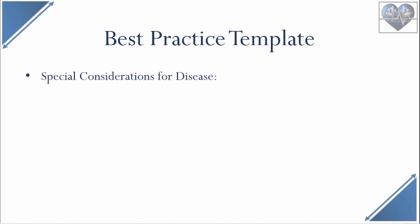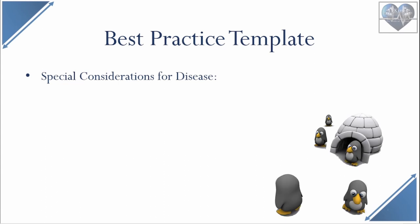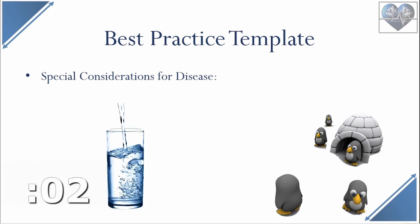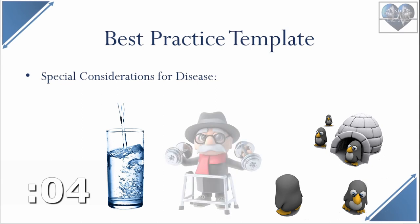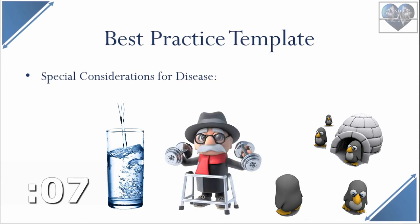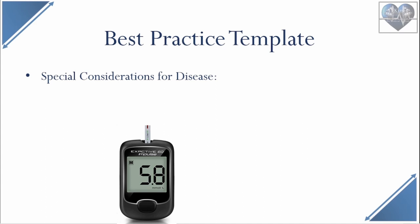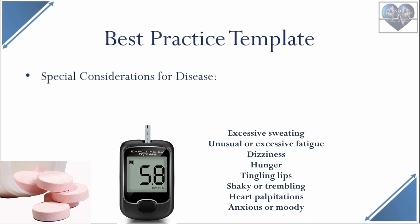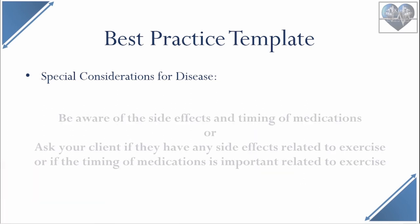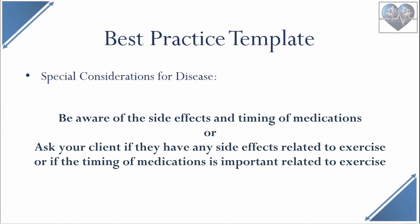Two quick examples of how to insert special considerations for disease: for individuals diagnosed with multiple sclerosis, make sure the training environment is cool, use longer rest periods between sets, ensure adequate hydration, and take mobility issues into consideration. For individuals diagnosed with type 2 diabetes, check blood sugar to make sure it's in the safe range, ensure some carbs are on hand, and be aware of the signs of hypoglycemia. These medical special considerations also include any side effects medications might have, or the need to properly time medication ingestion with an exercise session.